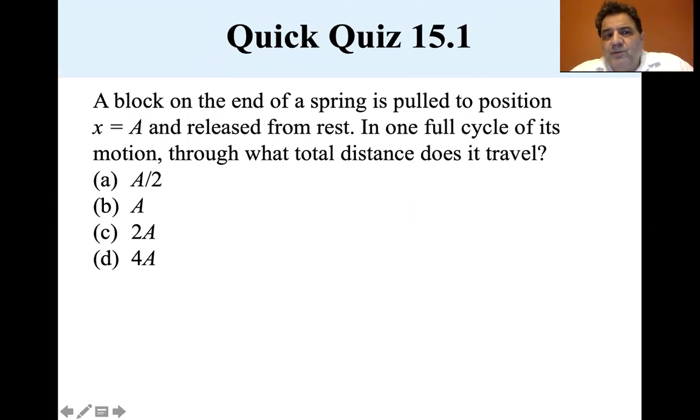A over 2, A, 2A, or 4A? So let's think about it. Let's say this is your equilibrium position. You pull a direction A and you release it. So it's going to travel A, it's going to travel A in this side, travel back A, and then A again. So that's actually four times that it's traveled the distance A, and there's the answer.